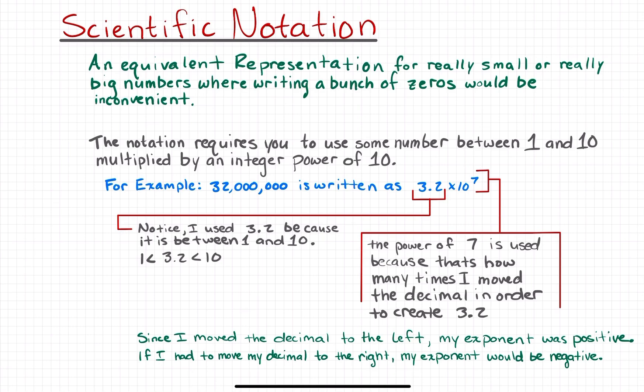If that decimal in 32 million was at the end, I would have to move that decimal 7 place values to the left in order to create the number 3.2. So that 7 is gonna go to my exponent over my 10. That's how I got 3.2 times 10 to the power of 7.